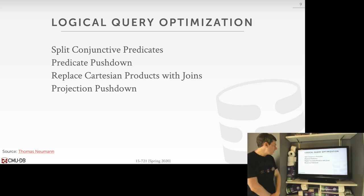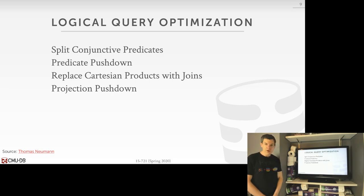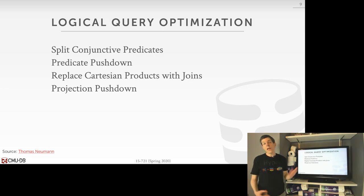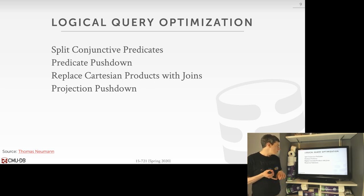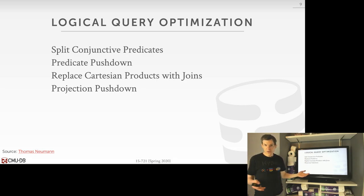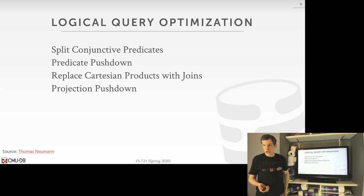I want to go through four different examples of the types of logical query optimizations we can do — these come from Thomas Neumann, the HyPer guy in Germany, who teaches a whole class on query optimization. We'll see how to do splits on conjunctive predicates, predicate pushdown, replacing Cartesian products with joins (since at the very beginning all we have are Cartesian products), and then projection pushdown.